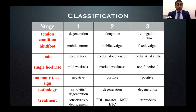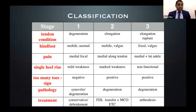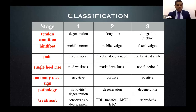Looking at the Johnson and Strom classification in detail: in stage one, the tendon is degenerate, the hindfoot is mobile with no deformity, pain is on the tendon, and the patient struggles with but can perform a single-stance heel raise — the too-many-toes sign may be absent. By stage two, there is obvious elongation, hindfoot valgus deformity that is correctable, and marked weakness on tiptoes. By stage three, the deformity — sometimes with rupture — is no longer correctable.